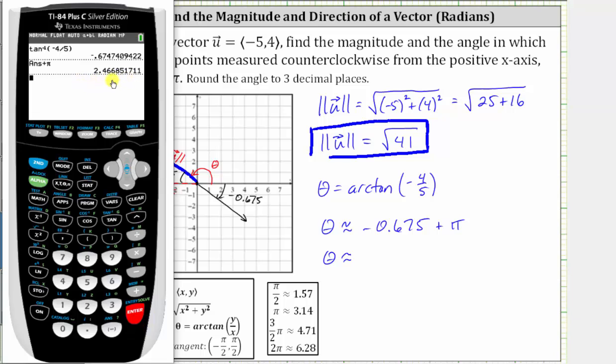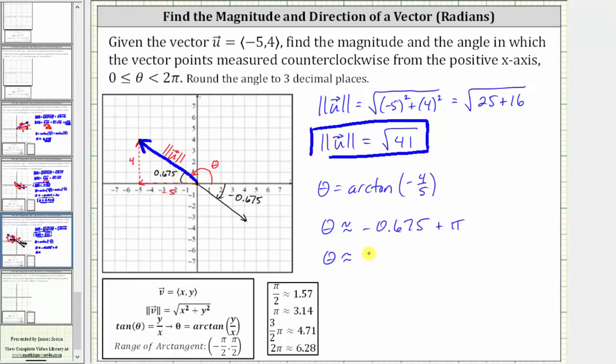This is more accurate than if we did the calculation shown here on the screen of negative 0.675 plus pi. In this case, to three decimal places, we do get the same angle of 2.467 radians. Even though the previous value here has more accuracy. The direction of vector u is approximately 2.467 radians, which again is this red angle here. So it is important to make sure we do give the correct angle theta for the direction of the angle in the given interval. I hope you found this helpful.